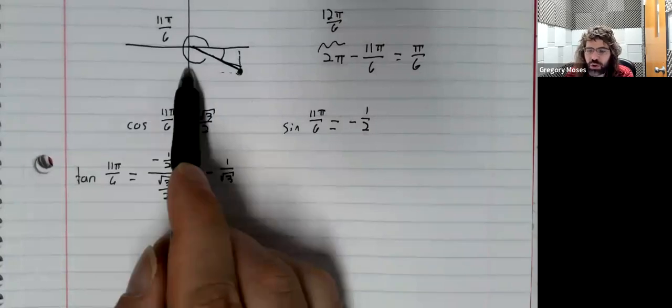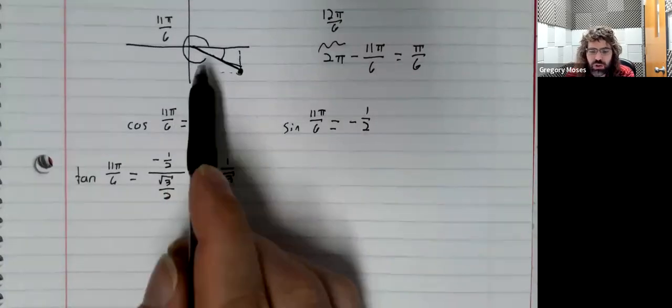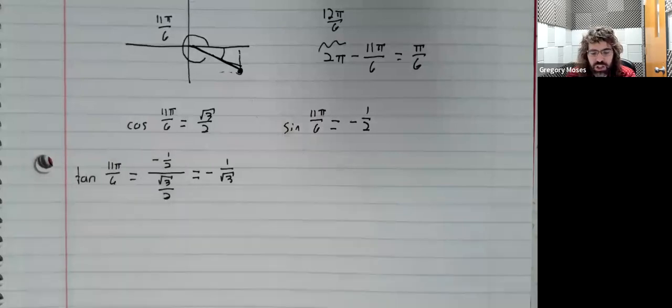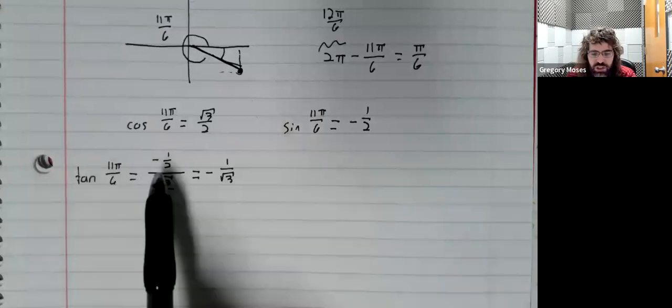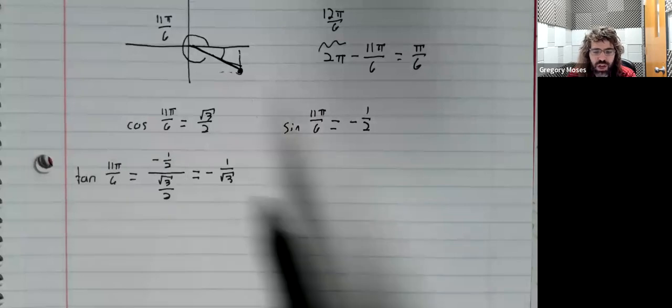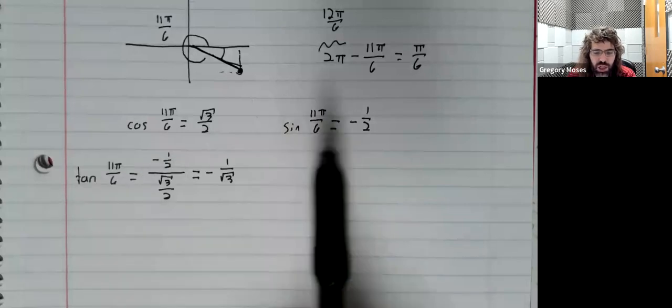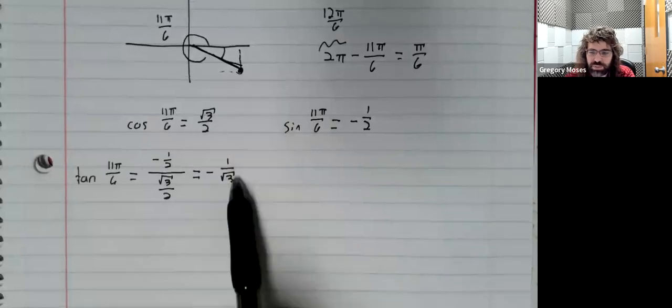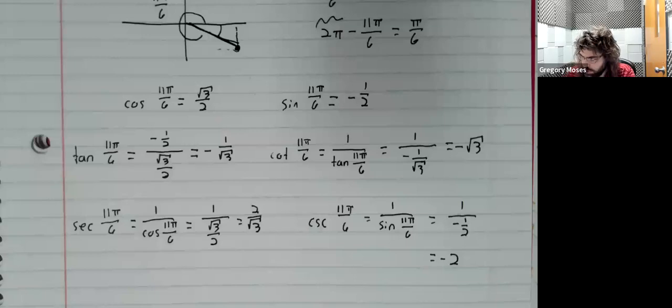And then the other four trig functions are going to be positive or negative just via the division. Again, the tangent is a negative number divided by a positive number, so it's negative.